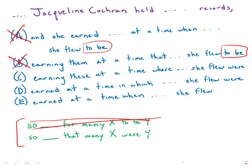C, D, and E have the correct construction with 'that.' But then another thing to look at is the pronoun used with 'time.' 'Time when' — that's correct; 'when' is the proper pronoun to use with 'time.' 'Time that' and 'time in which' are not correct. 'Time when' is correct.